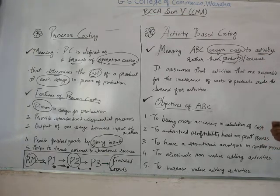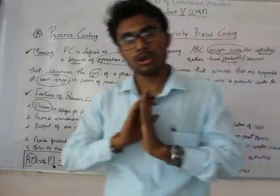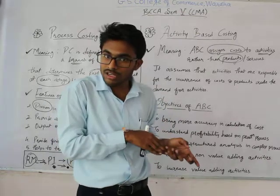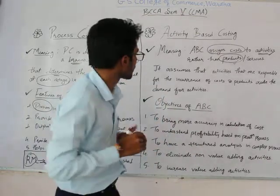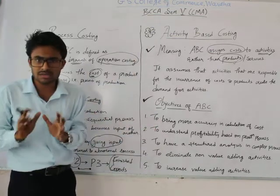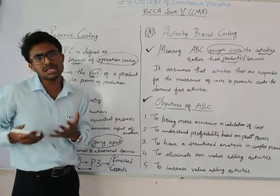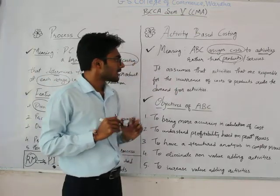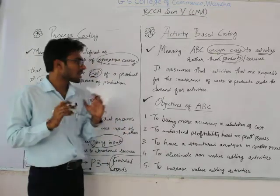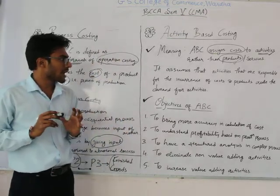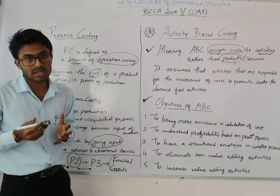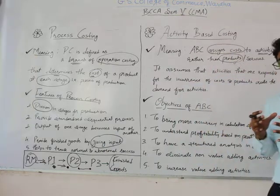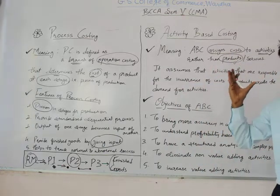ABC works on a key assumption: that activities are responsible for the incurrence of cost, and products create the demand for activities. If you want to create a difference between your product levels and your activity levels, activities can be done through different processes. By focusing on activities, we can cost the activity and measure different performance levels.